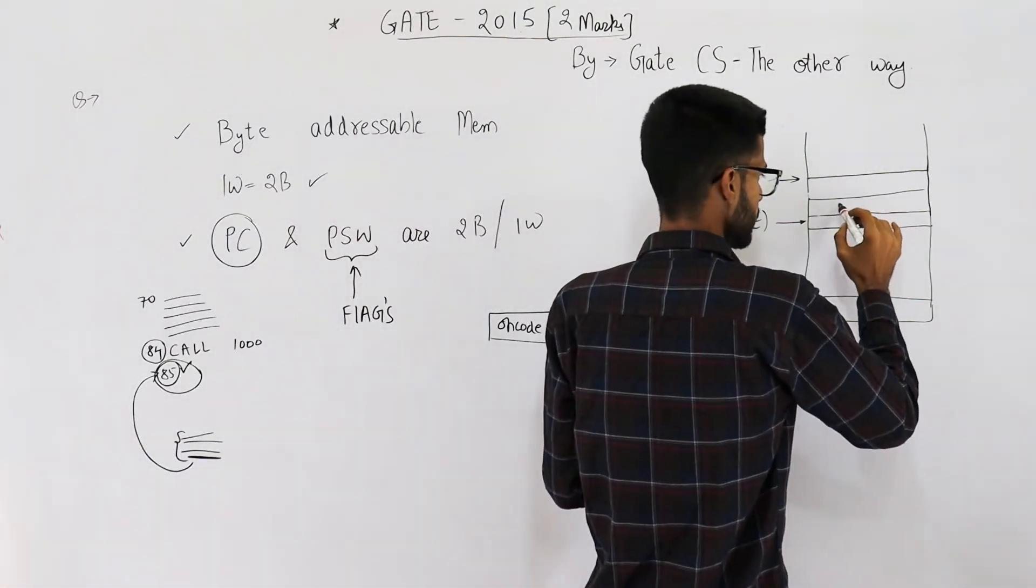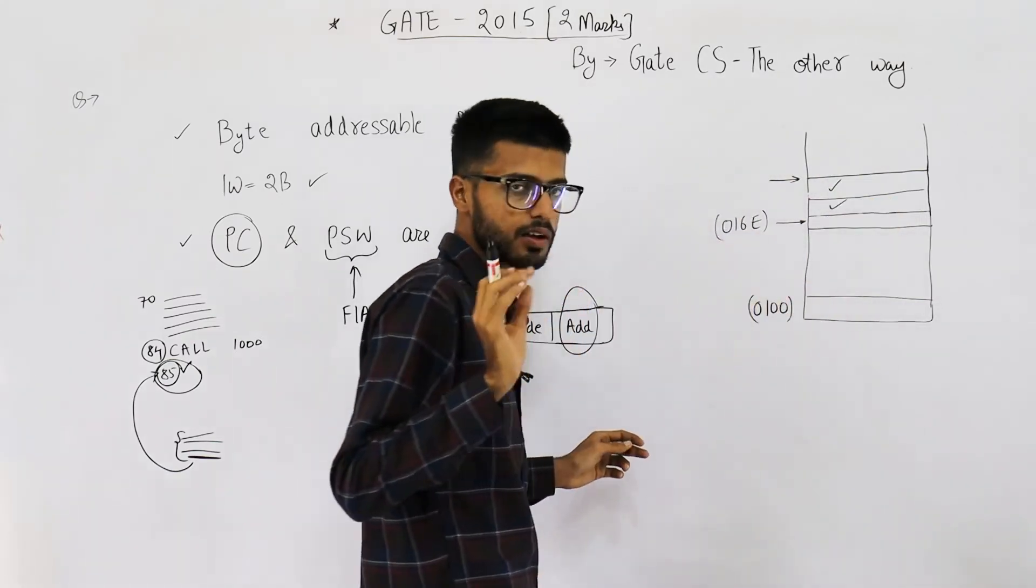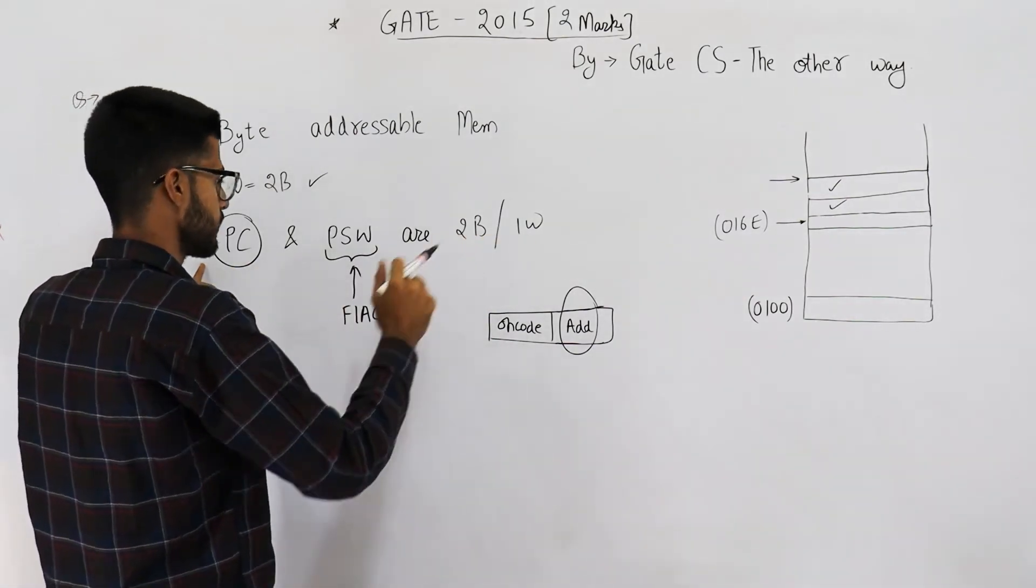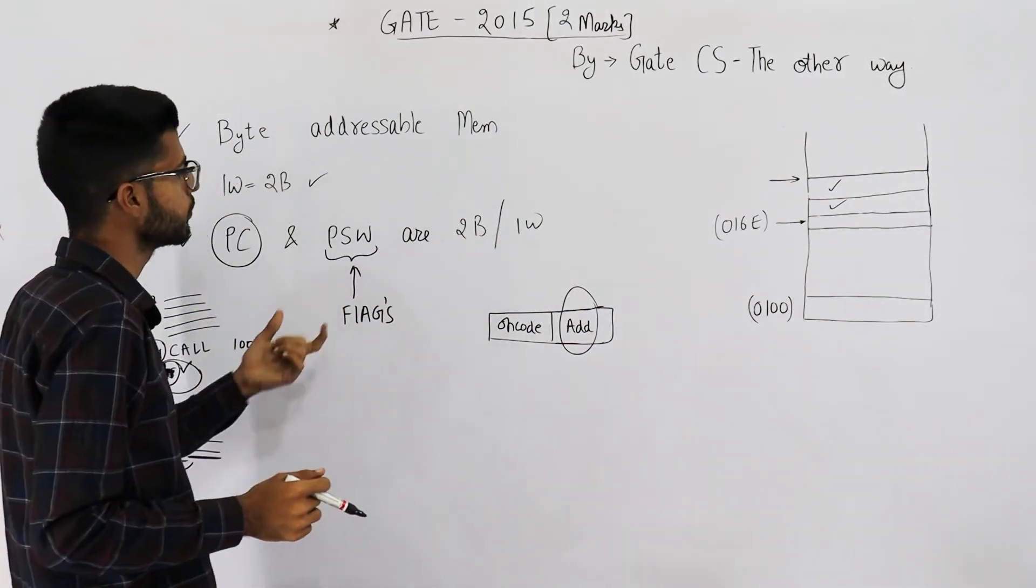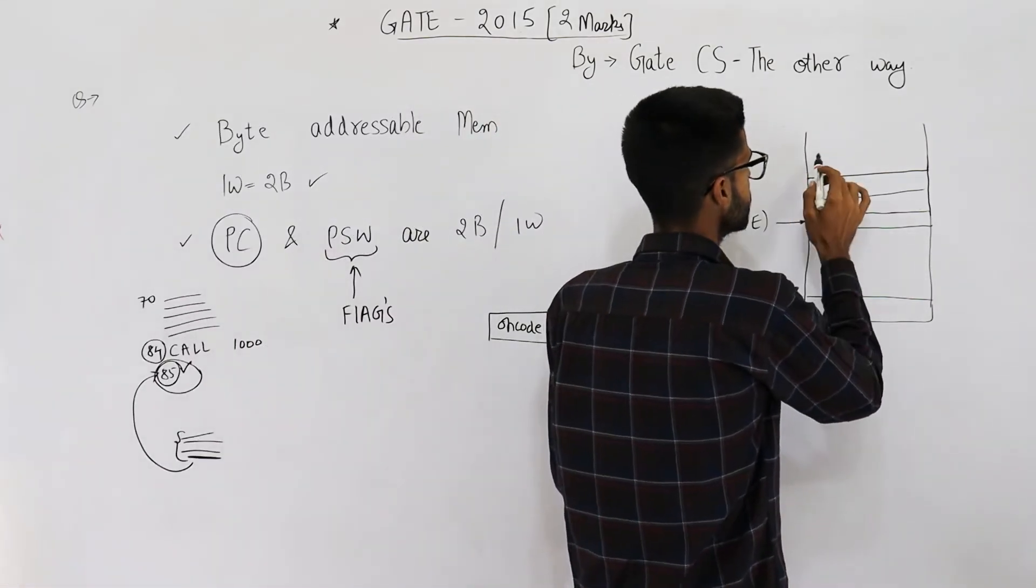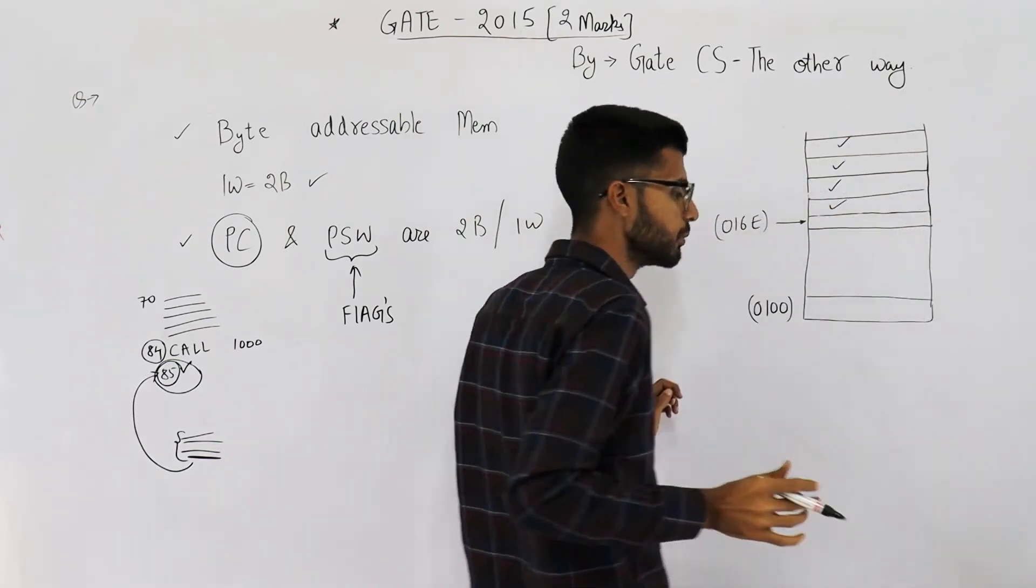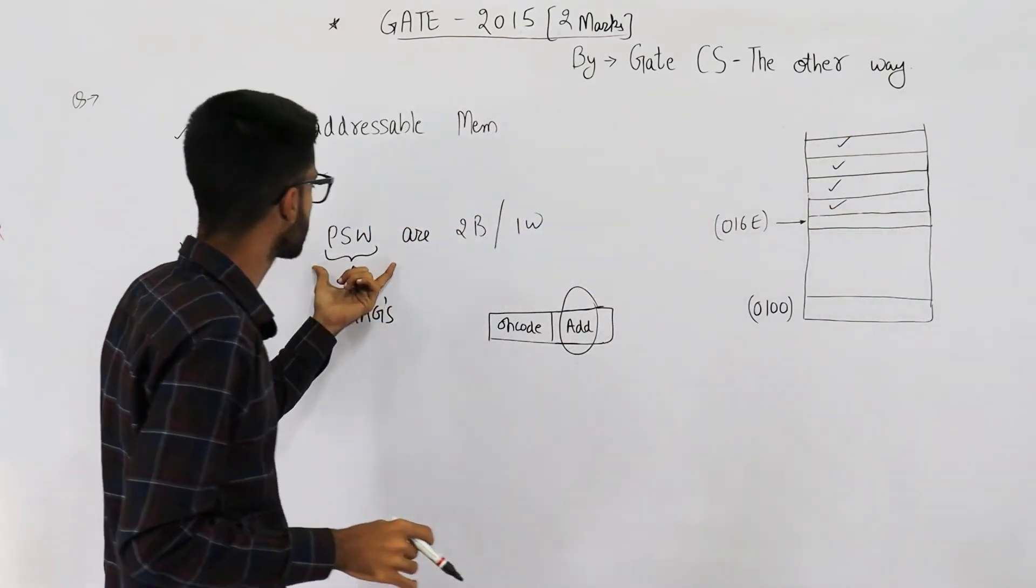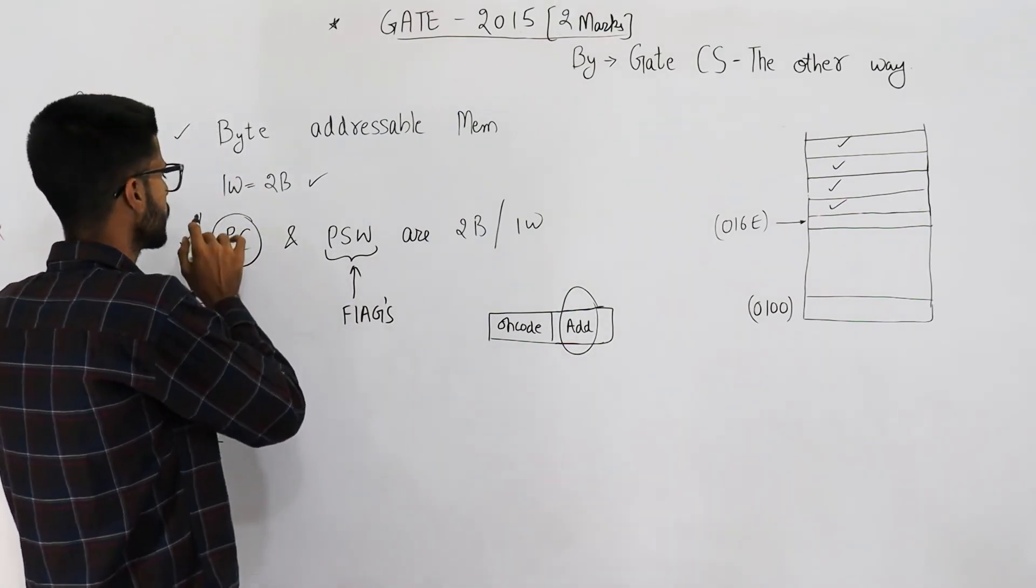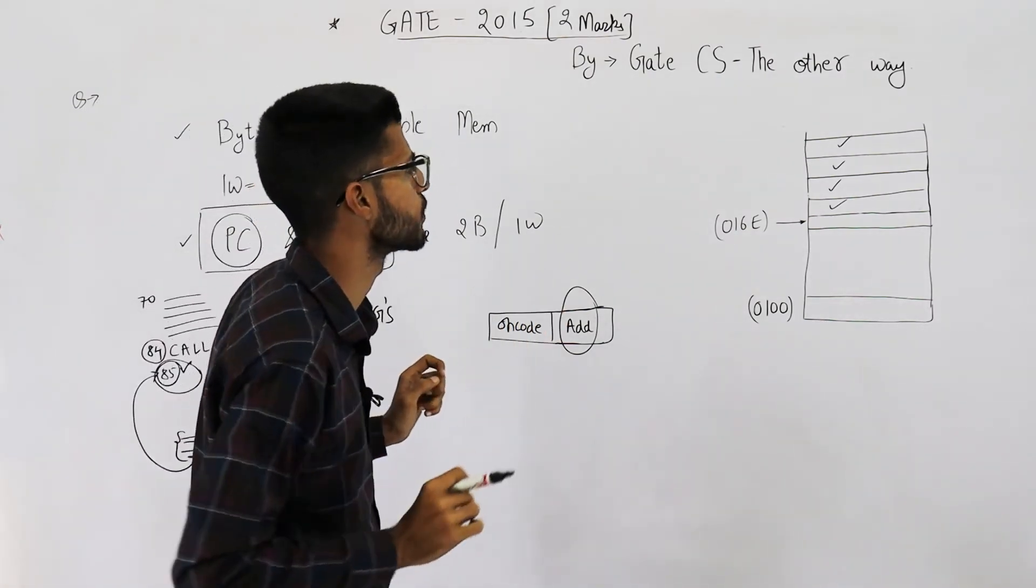Now you will use these two bytes, this one and this one, for saving the contents of program counter because program counter is two bytes or one word. Similarly, program status word will also use two addresses. That means this address and this address will be used by your program status word or the flags register. Contents of these two are to be saved onto the stack. So in total you have used four bytes.